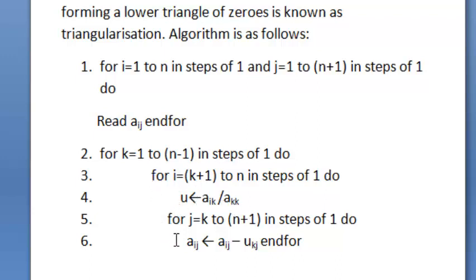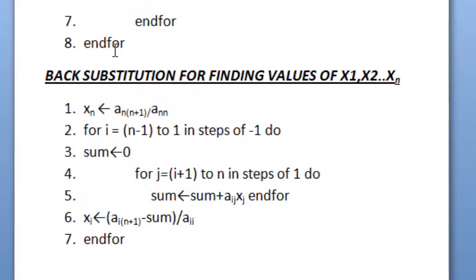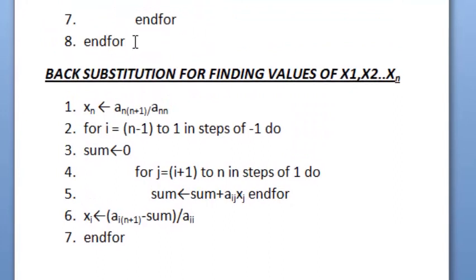Now, here again a nested loop for J which begins with J is equal to K and ends up to N plus 1. Again, in steps of 1, we substitute the value of Aij minus Ukj into Aij. Now, here the for loop ends and all the other for loops also end here.